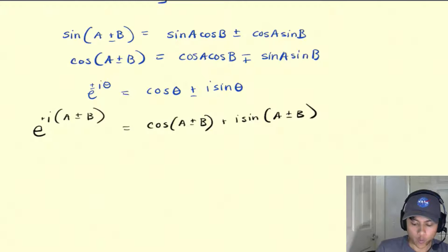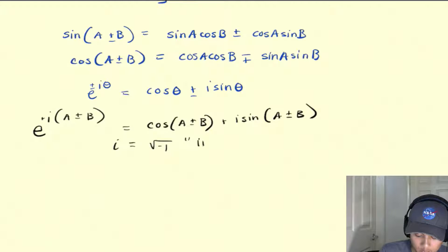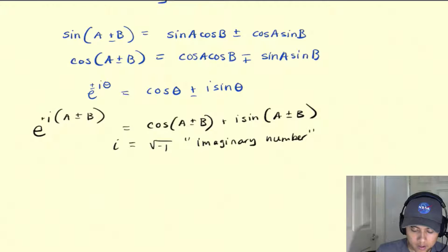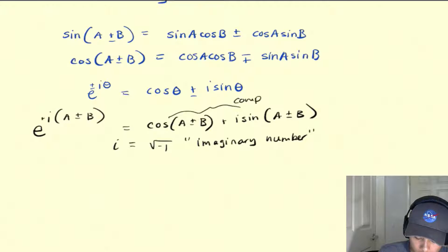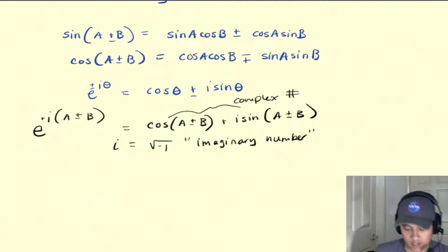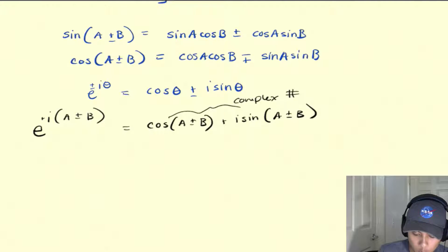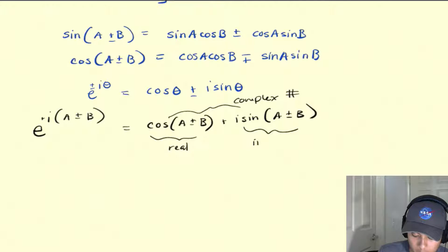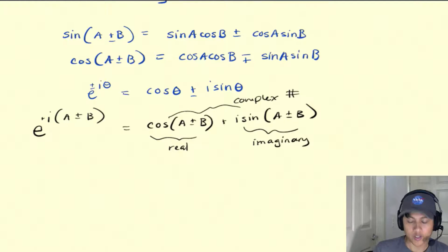Remember what i is — i equals the square root of negative 1, and it has the moniker of an imaginary number. This entire expression is known as a complex number. When you have a complex number, it has a real part and an imaginary part. To get a complex number, you combine a real and imaginary number together. This will be important when we derive the identities.